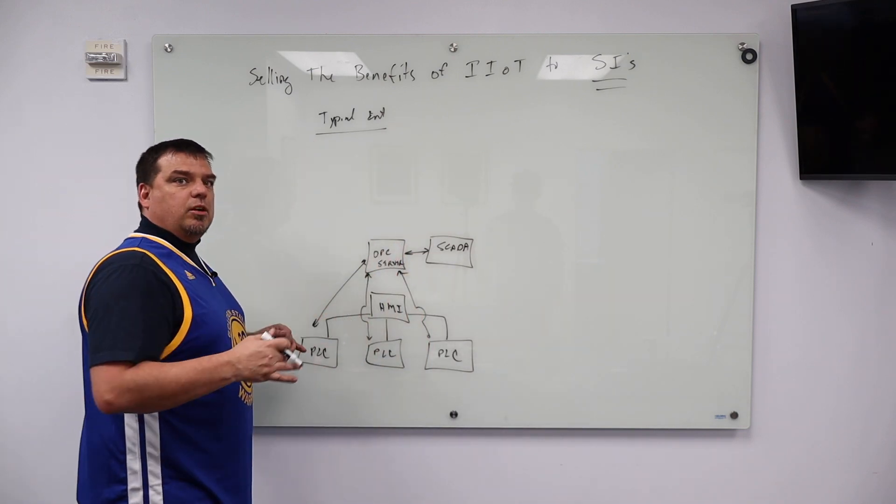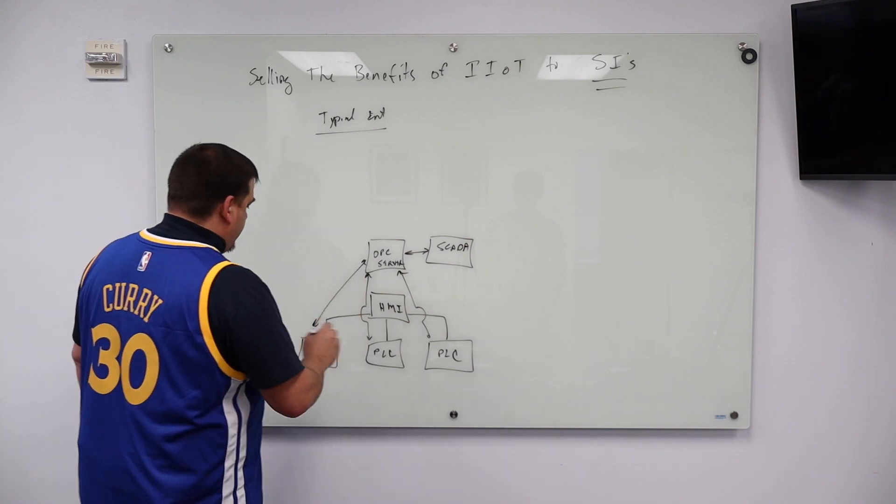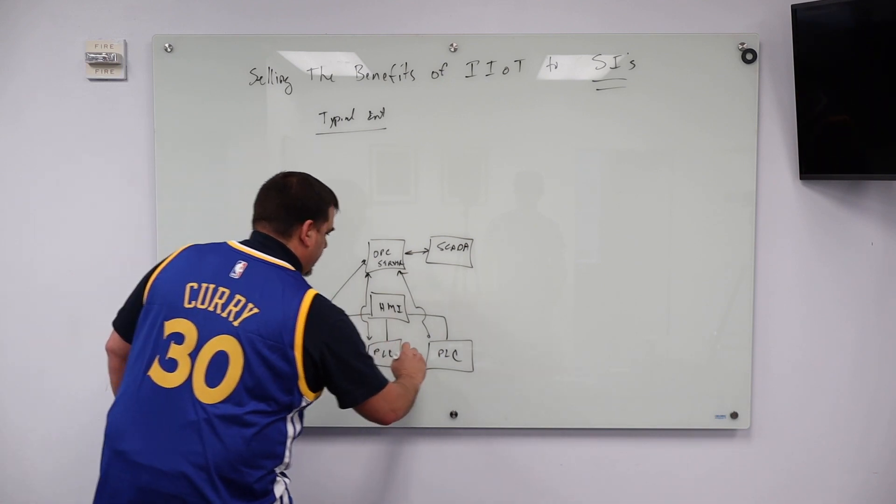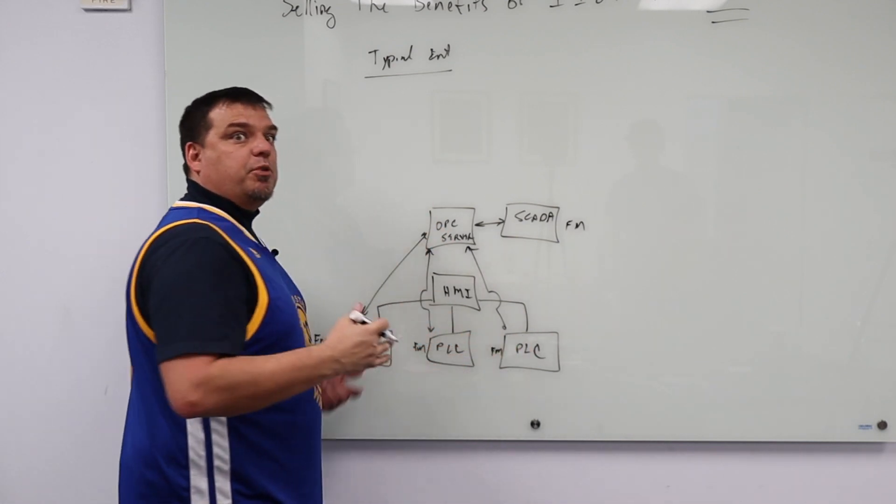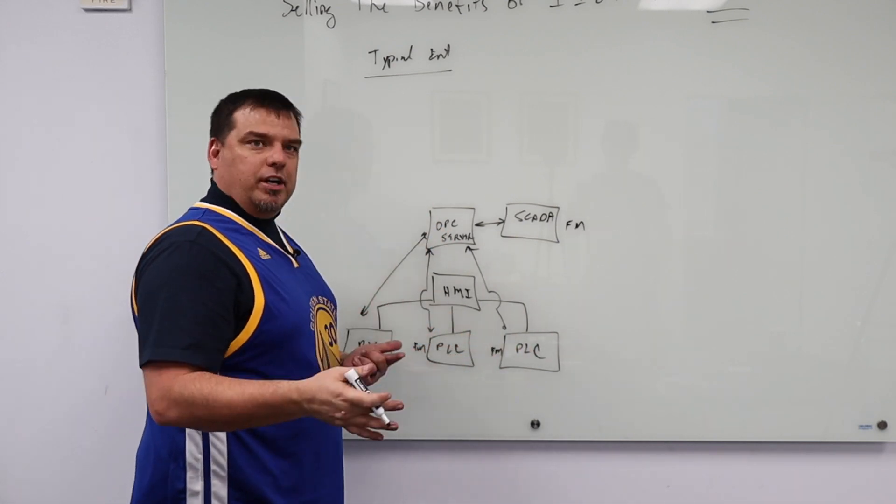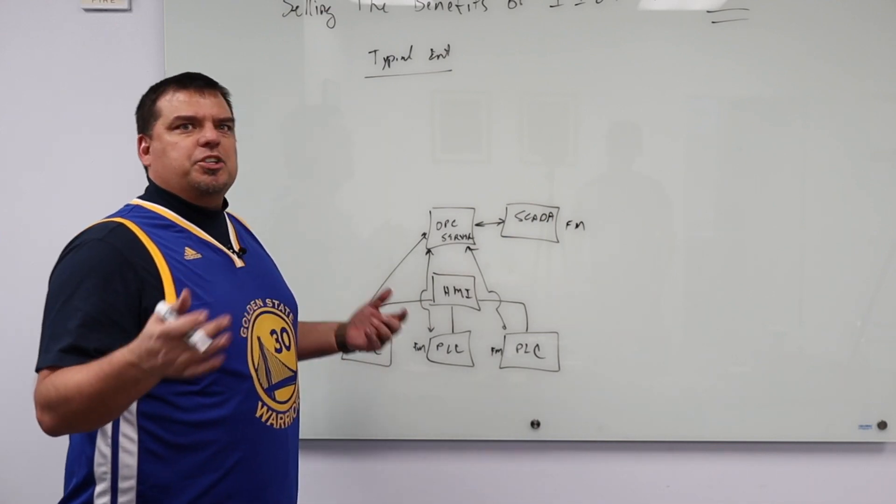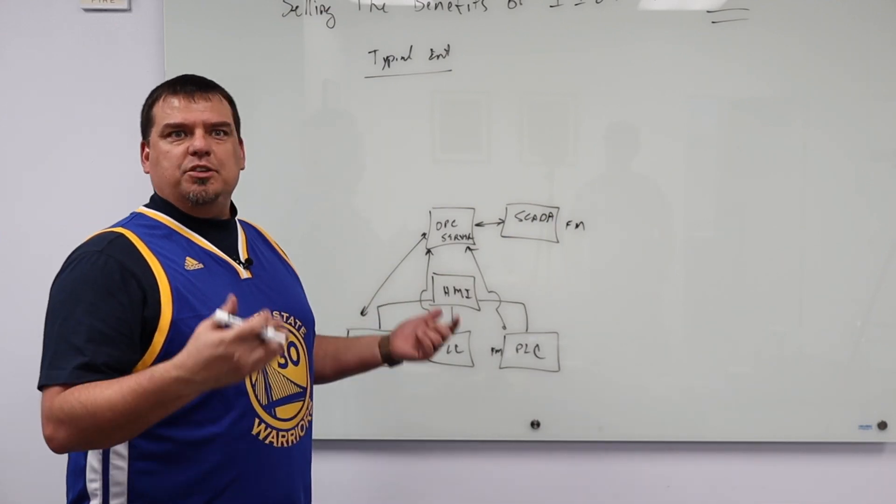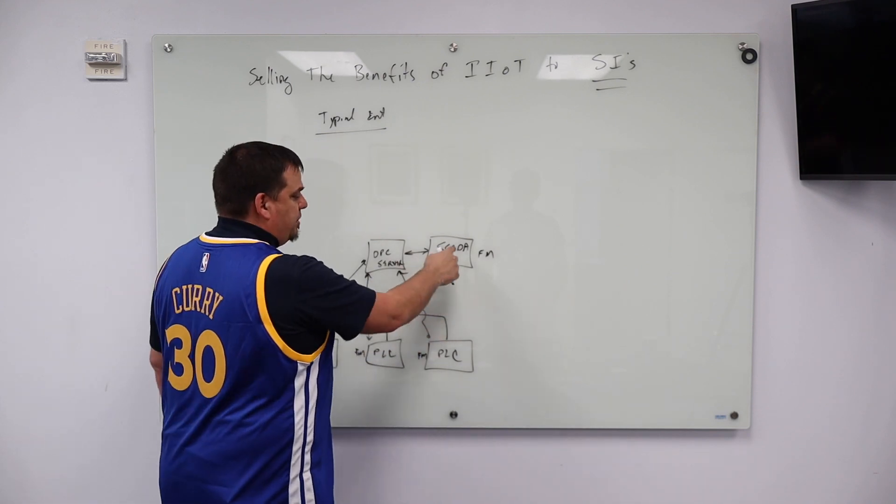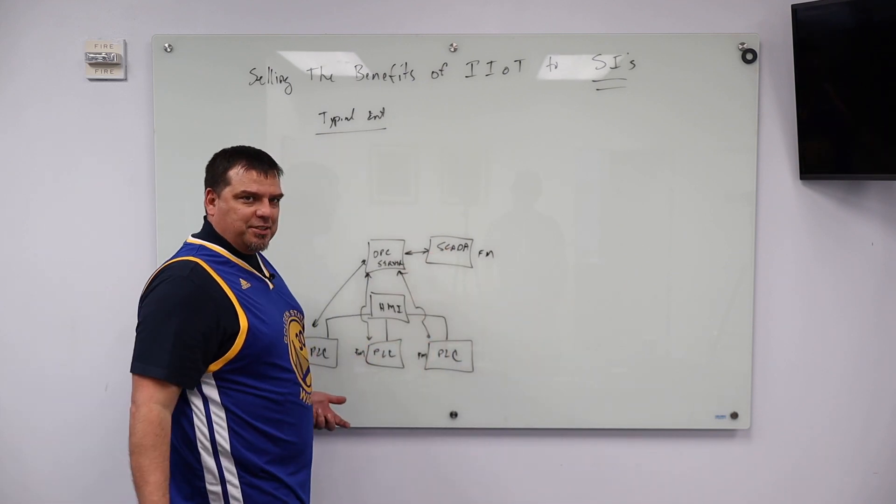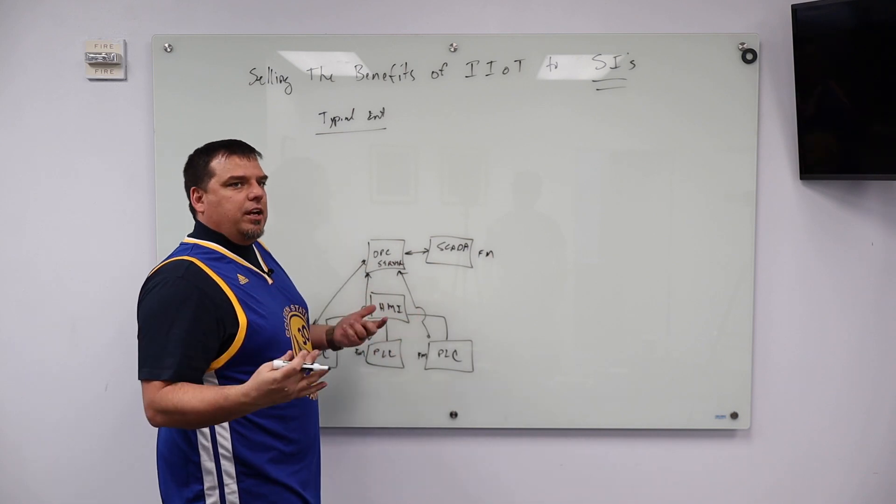For the current systems integrator, what they're trying to do is they are trying to force multiply here, here, here, and here. That is that they want to write one PLC program and use it over and over and over again. So generally they'll create a bunch of objects that they're going to run in the PLC and use over and over and over again. They will also in their SCADA system build objects that line up with the objects in their PLCs. And that's their idea of trying to force multiply.